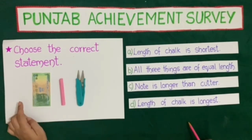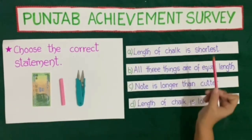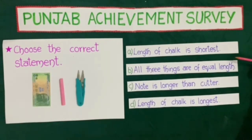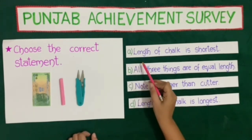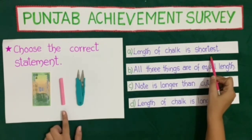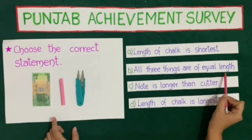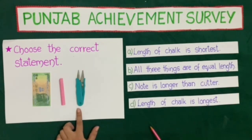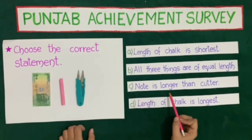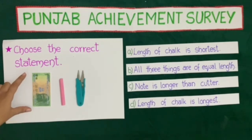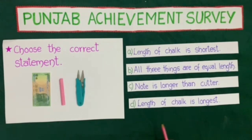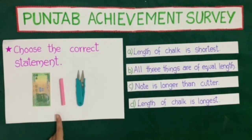Now we will solve one question from the Punjab Achievement Survey. The question is: choose the correct statement. Four statements are given. A: length of chalk is shortest. B: all 3 things are of equal length. C: note is longer than cutter. D: length of chalk is longest. The correct answer is A — the length of chalk is shortest — so we will mark a tick against A.